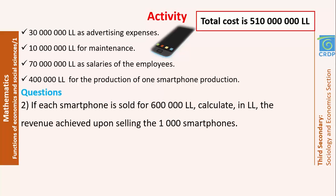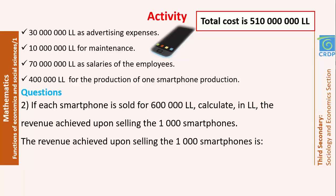In number 2, if each smartphone is sold for 600,000 Lebanese lira, calculate in Lebanese lira the revenue achieved upon selling the 1,000 smartphones. The revenue achieved means the amount of money gained by the enterprise for selling these 1,000 smartphones. So, I multiply the selling price of 600,000 Lebanese lira by 1,000, which gives 600,000,000 Lebanese lira as the revenue achieved by this enterprise.